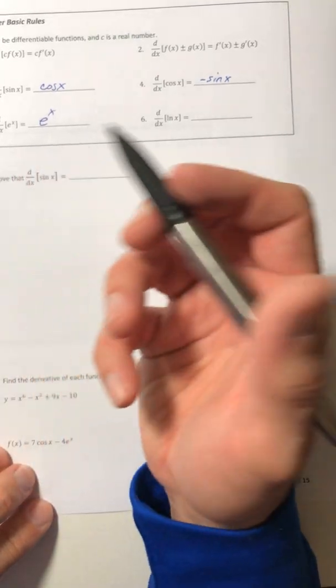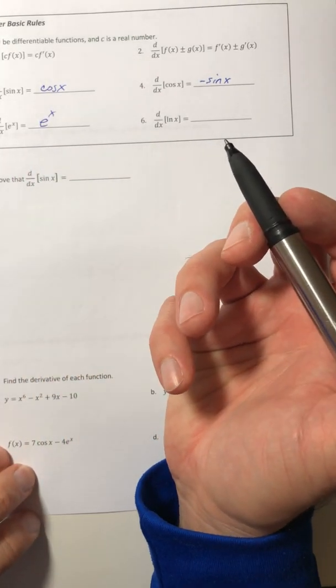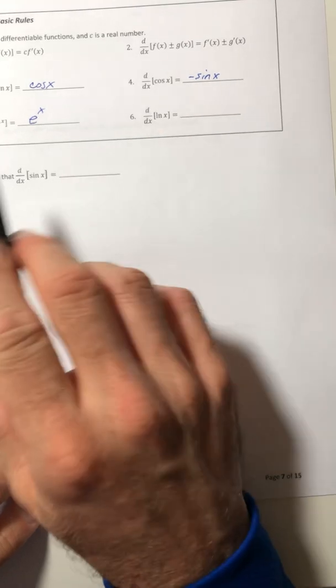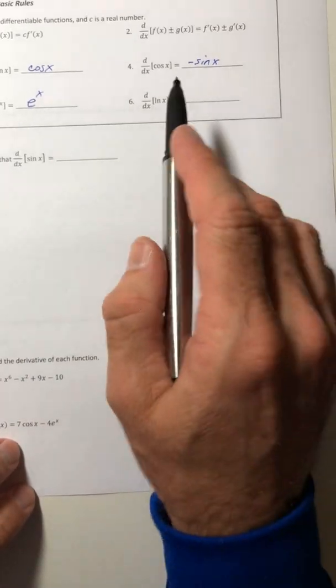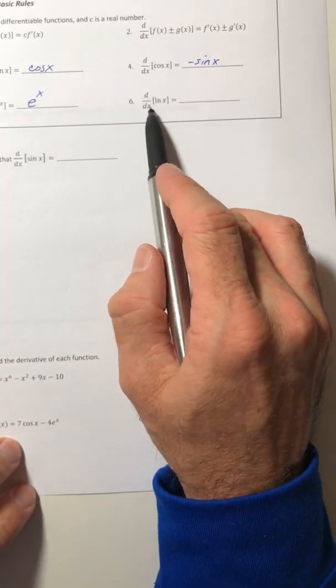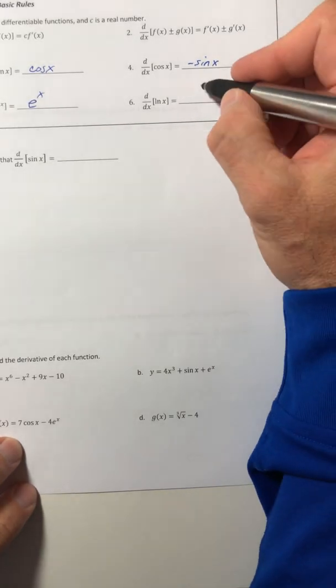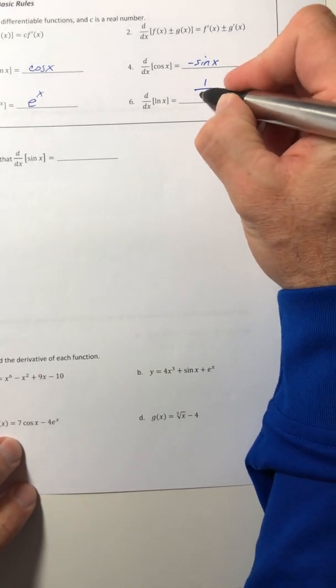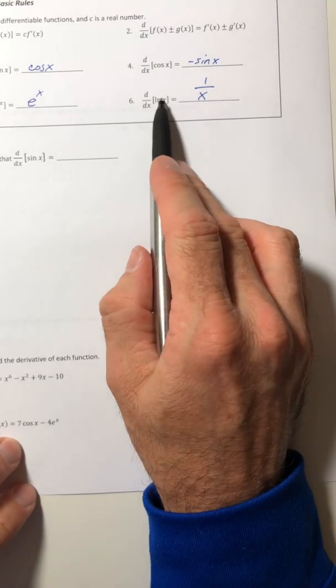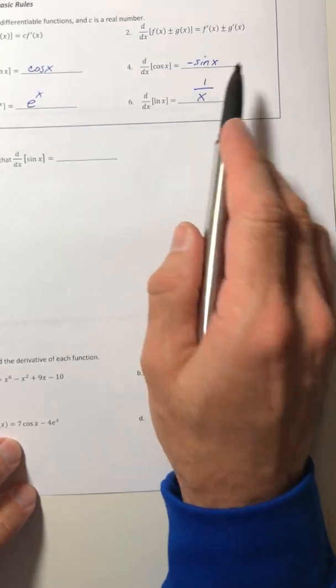So with e, it is changing at its own rate, which is really weird. The derivative of ln of x, this one's also weird in that it gives you a completely different type of function. It goes from a logarithm to rational.